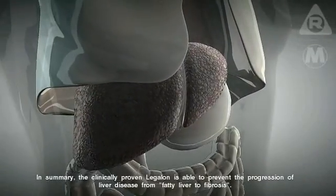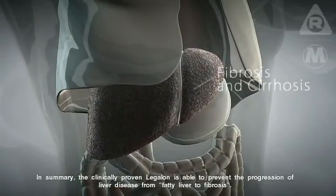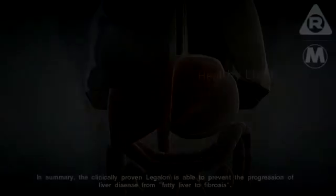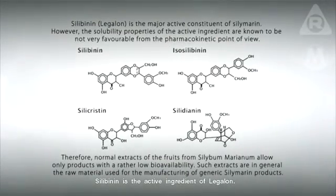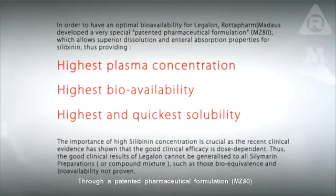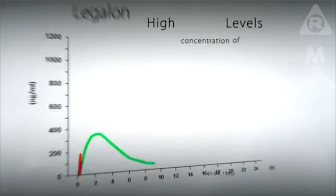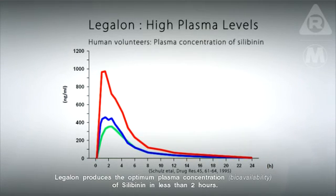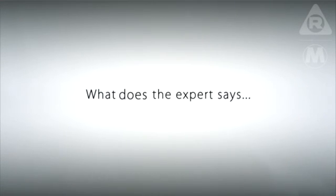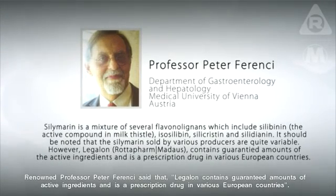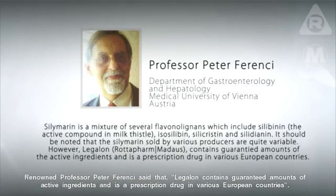In summary, the clinically proven Legalon is able to prevent the progression of liver disease from fatty liver to fibrosis. Silibinin is the active ingredient of Legalon. Through a patented pharmaceutical formulation MZ80, Legalon produces the optimum plasma concentration of silibinin in less than two hours. Renowned Professor Peter Frenchy noted that Legalon contains guaranteed amounts of active ingredients and is a prescription drug in various European countries.